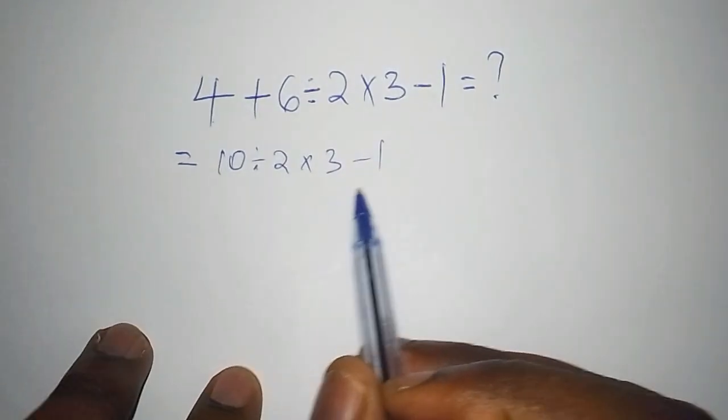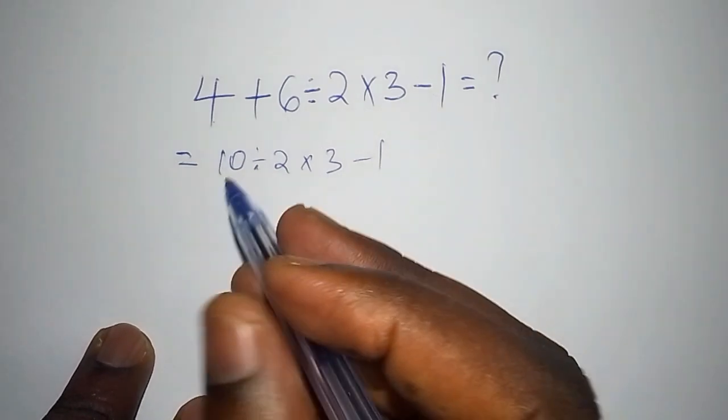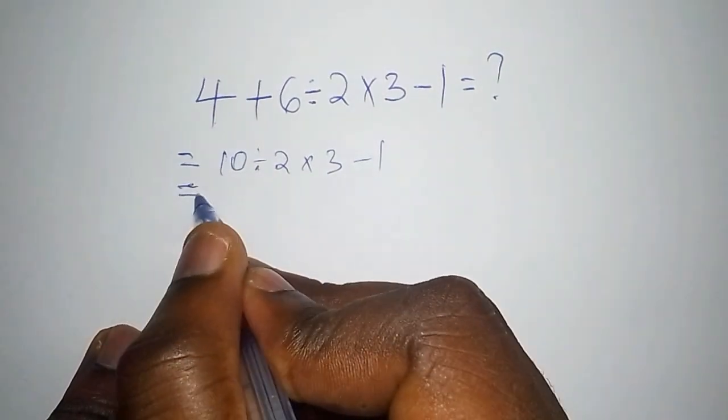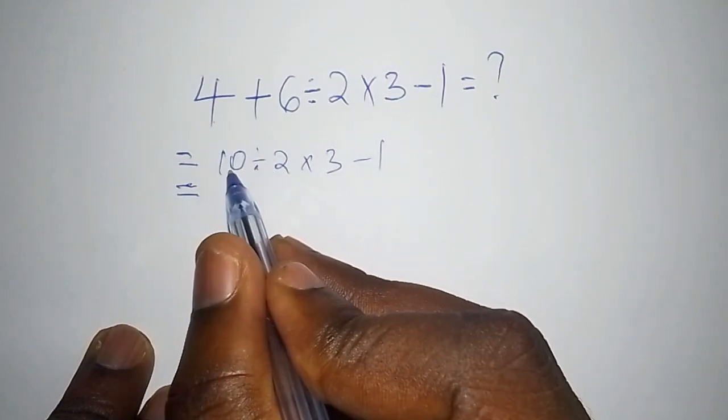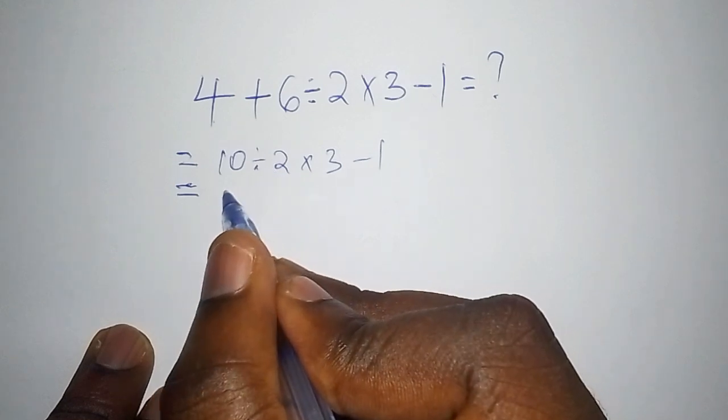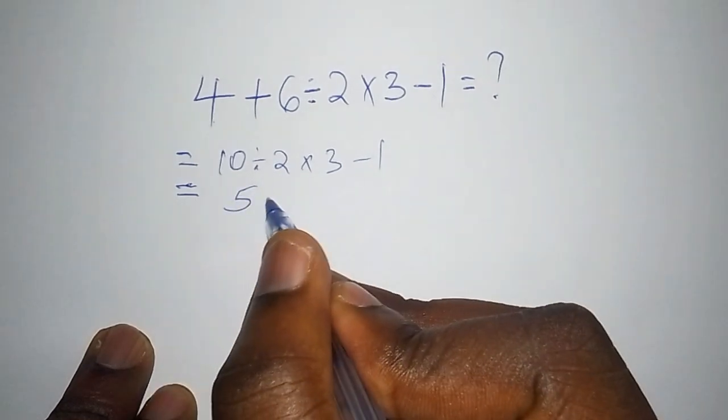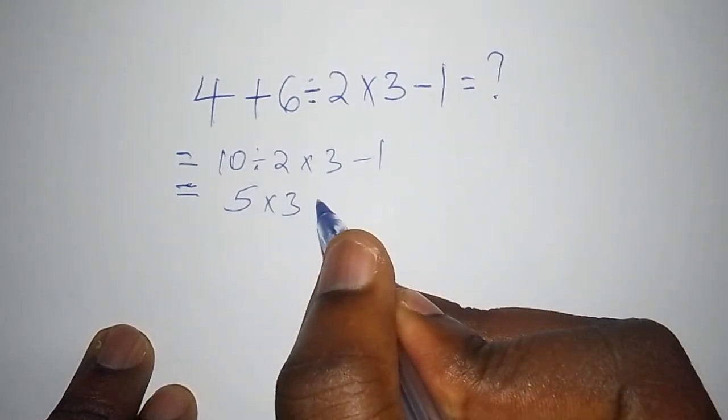So this one is the first step. Then the second step is that they say that 10 divide by 2 is 5 then 5 multiply by 3 subtract from 1.